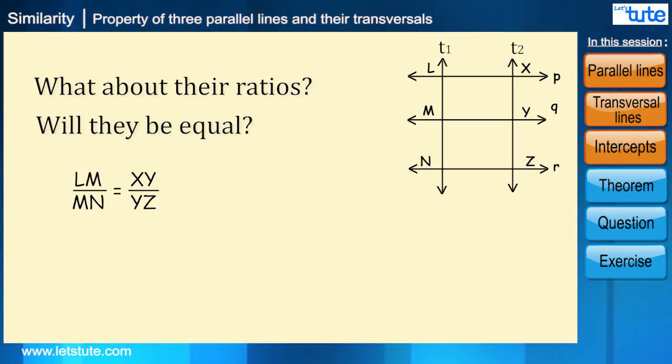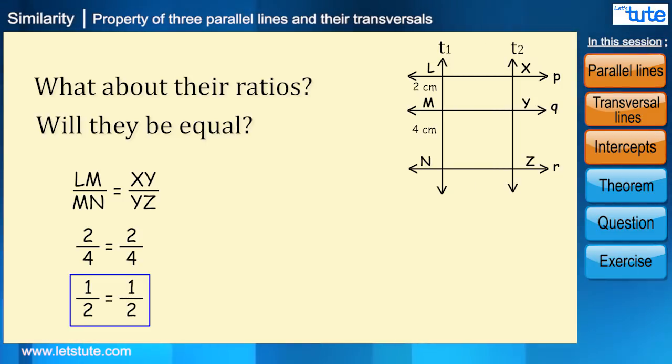Okay, but what if the distance between parallel lines are not equal? For example, let's say LM and XY equal to 2 centimeters, and MN and YZ equal to 4 centimeters. Let's see whether we are getting the ratio LM divided by MN equal to XY divided by YZ. By substituting the values we will get 1 divided by 2 equal to 1 divided by 2. Well, we can see here the ratio of the intercepts is equal as the transversals were also parallel to each other.